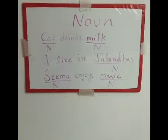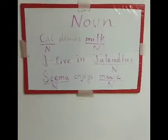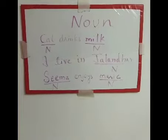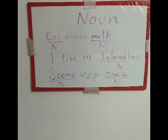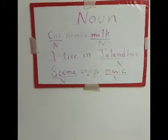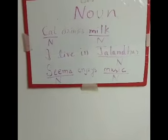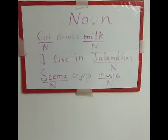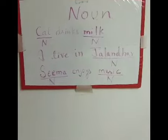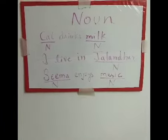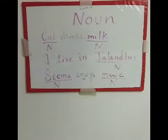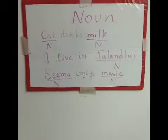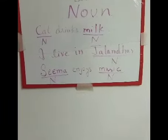Let's understand nouns with some examples. Our first sentence: 'Cat drinks milk.' Here, cat is the name of an animal, so cat is a noun. And milk is the name of a thing, so milk is also a noun. Next sentence: 'I live in Jalandhar.' Here, Jalandhar is the name of a place, so Jalandhar is a noun.